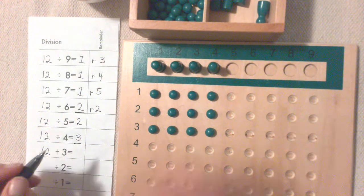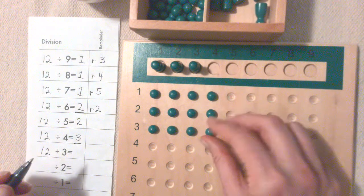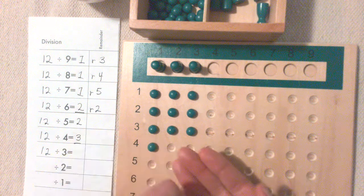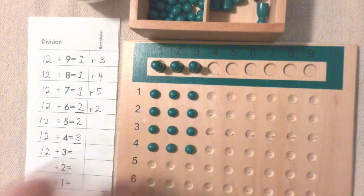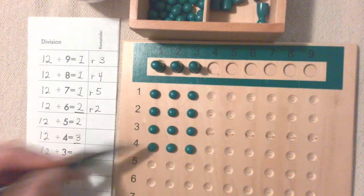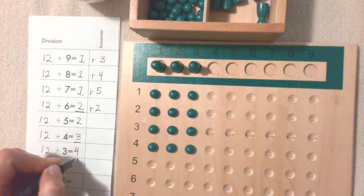12 divided by 3. Take one Skittle away and distribute the beads. And the answer is one, two, three, four with no remainders.